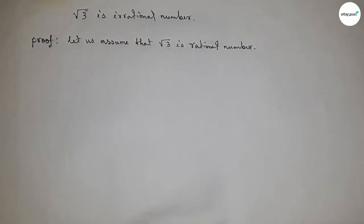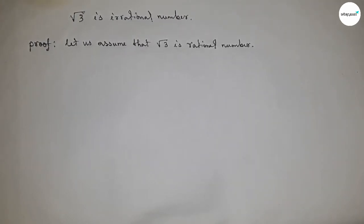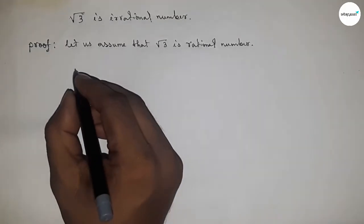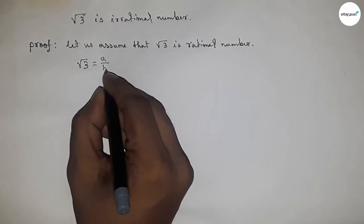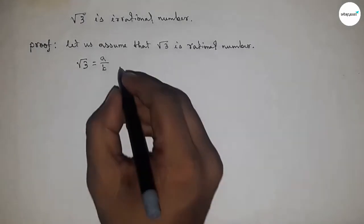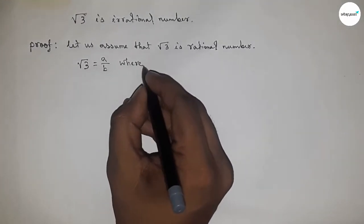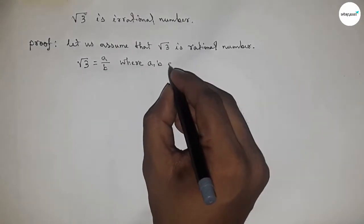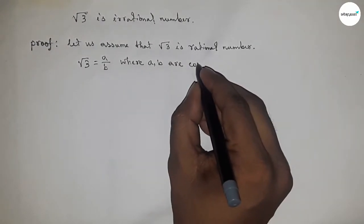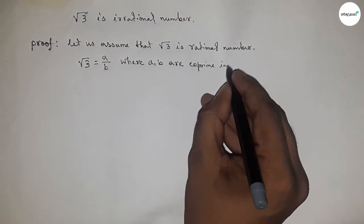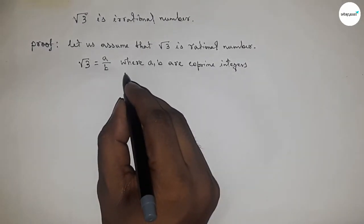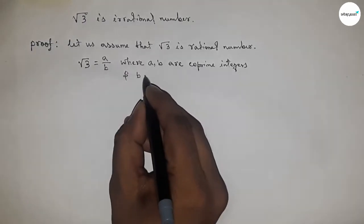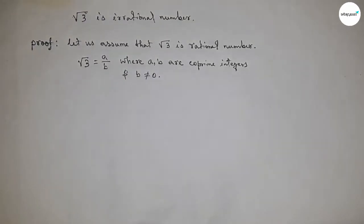For a rational number, we can express it in the form p by q. So we can write root 3 equal to a by b, where a and b are co-prime integers, or prime to each other, and b is never equal to 0.